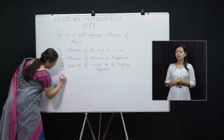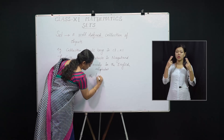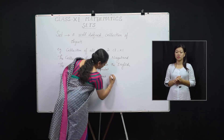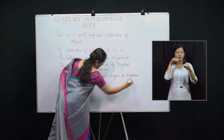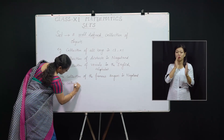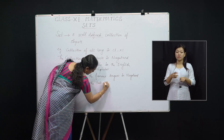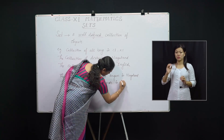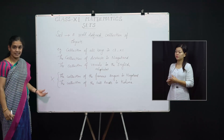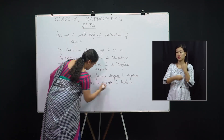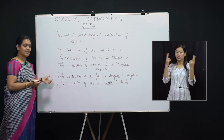Also, the collection of the famous singers in Nagaland, and the collection of tall boys or tall trees in Kohima — these two do not represent a set, because 'famous singers' and 'tall trees' may vary from person to person. It gives us a vague meaning. Therefore, it is not a set; it is just a collection.